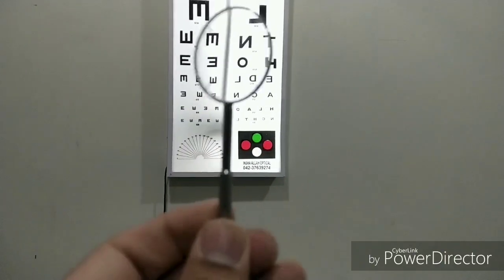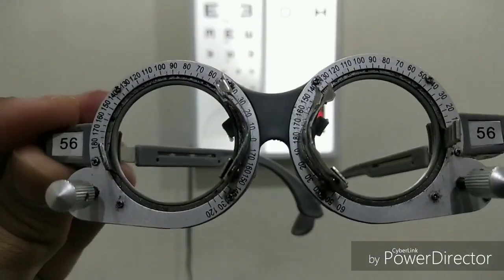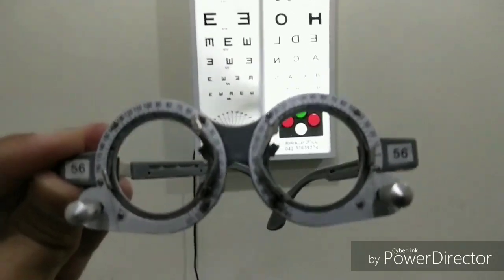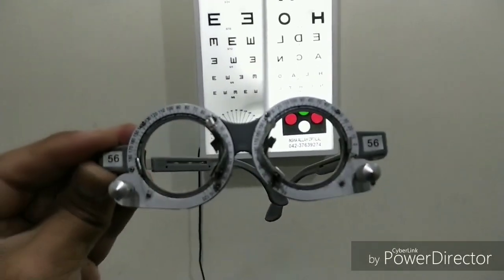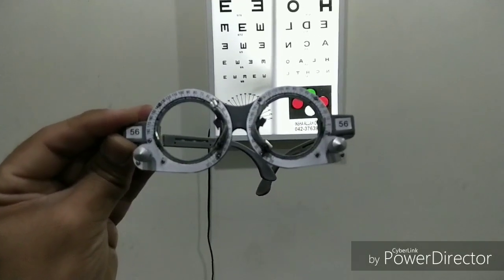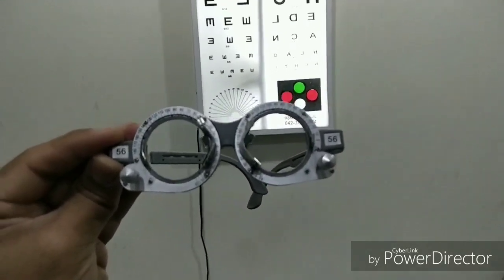That's the cross cylinder, and that's the trial frame in which we put the spherical as well as astigmatic lenses. You can see the dial from 0 to 180 degrees. We have to place it and correct the astigmatism.